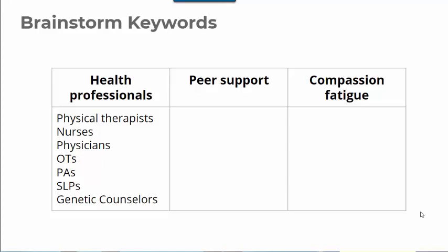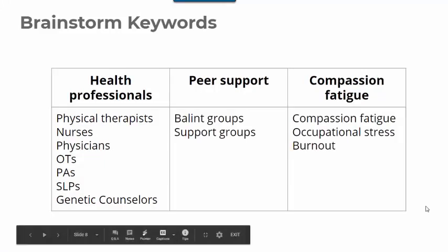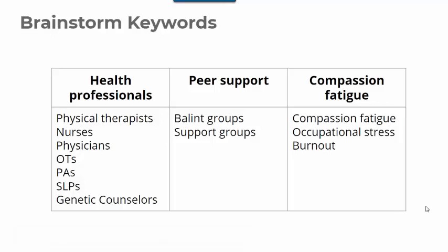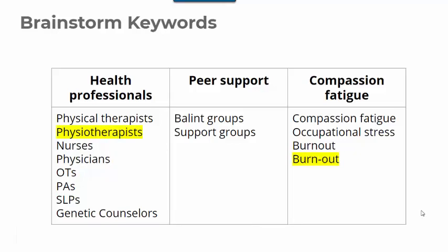Now we need to do that same brainstorming for the other terms as well. One of the things I like about this process is that it can help you think about what fits and what doesn't. For example, are compassion fatigue and burnout similar enough for our topic? Is occupational stress too broad? Often, you won't know the answers to these questions until you've run some searches. You may also not know all the alternative terminology until you've run some searches, but I'll talk more about that in the Refining Your Search video as well. Remember to include international variations as well as variations on spelling or format. Even these small variations need to be considered in your search.